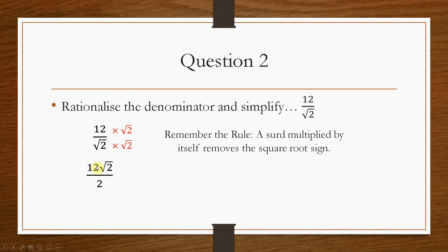Because here we can simplify the 12 and the 2. Nothing to do with the root 2, the 12 and the 2. So that becomes 12 divided by 2, which would give you 6 root 2. And that is your final answer.